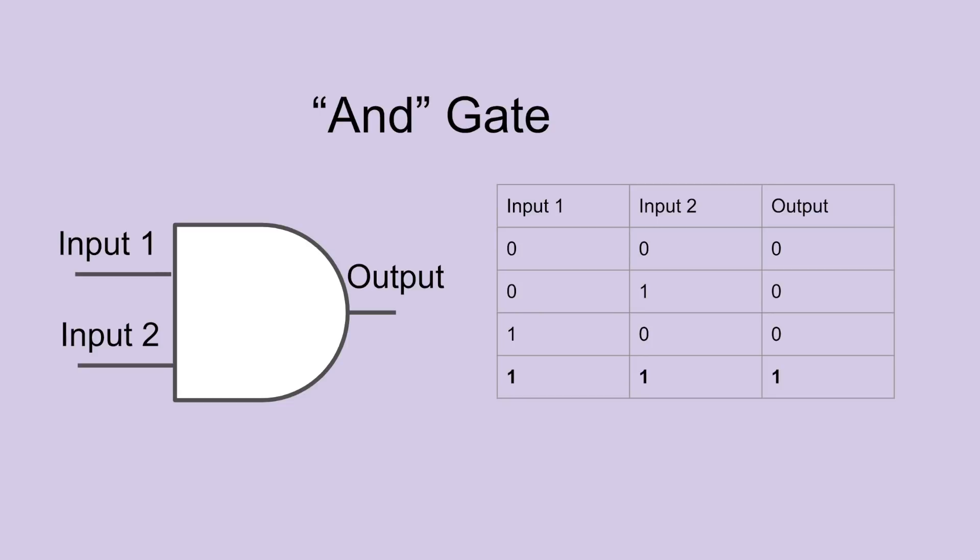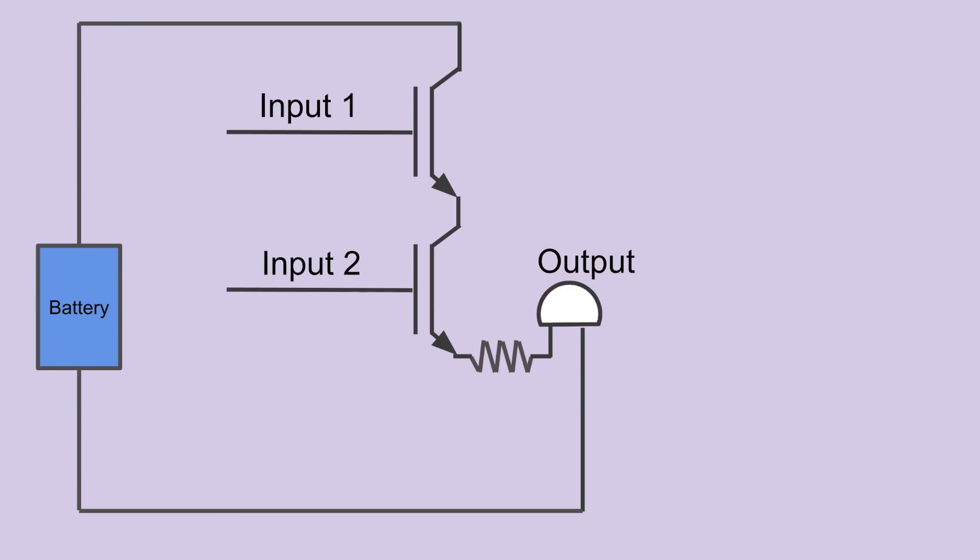So how might such a circuit look? Maybe something like this. If both transistor switches are open, or either one of them is open, the current has no path to travel. It's only when both of them are open that the current has a path to the light bulb.